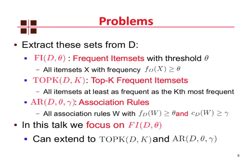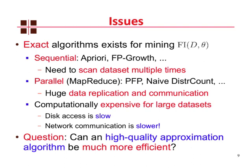There are exact algorithms to mine the collection of frequent itemsets — both sequential, like Apriori and FP-Growth, and parallel, like the PFP algorithm in the MapReduce framework. Both the sequential and parallel algorithms suffer from similar drawbacks. The sequential algorithm needs to scan the dataset multiple times, while the parallel algorithm needs to incur large data replication and communication between machines in order to parallelize the computation. This makes these algorithms very expensive for large datasets, because disk access is very slow and network communication in a distributed parallel setting is also quite slow.